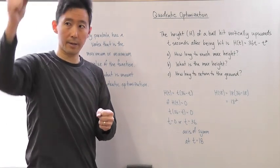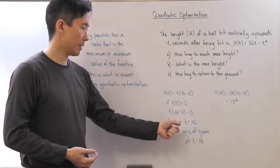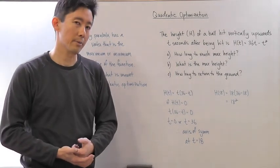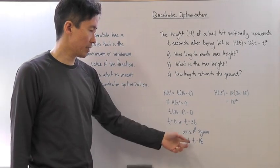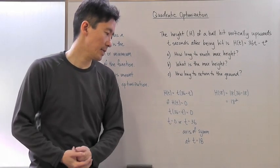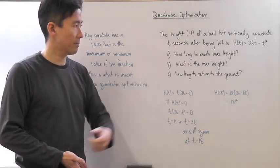We also know that since we're dealing with a quadratic, the axis of symmetry is actually going to be at the halfway point, which means that t is equal to 18. Therefore, how long will it take to reach maximum height? 18 seconds.